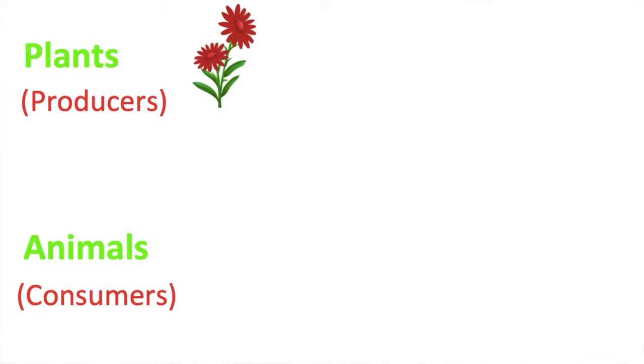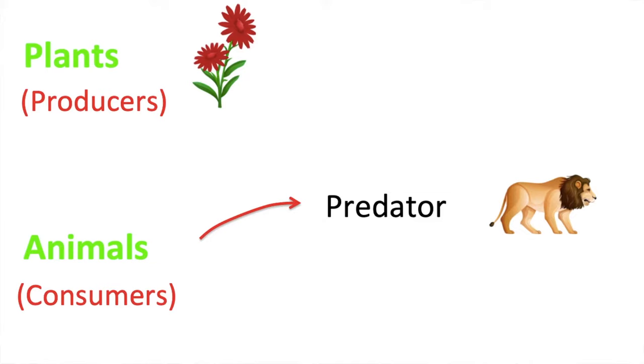An animal that eats another animal is called a predator. The animal they eat is called prey. So, predators eat prey.